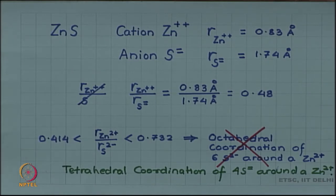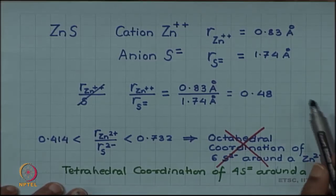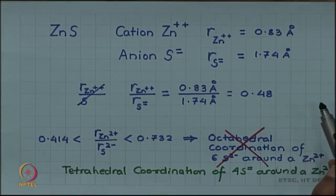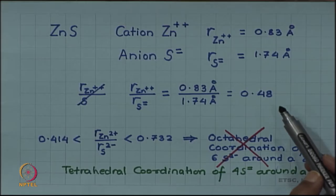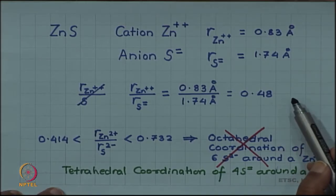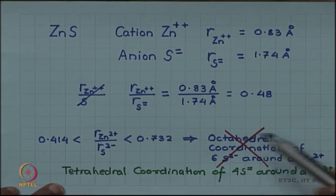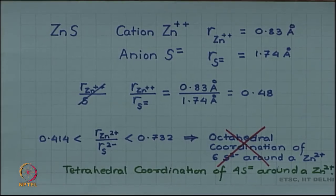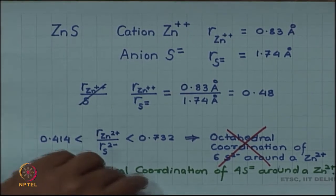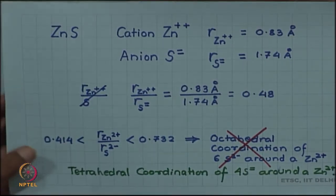This counter example shows that radius ratio is actually a rule of thumb. It is not a hard and fast rule which cannot be violated. In some cases, like zinc sulphide, we do not get a structure predicted by the radius ratio. Instead, we get a tetrahedral coordination of 4 sulphide ions around a zinc.